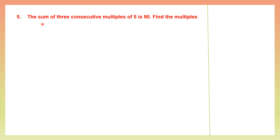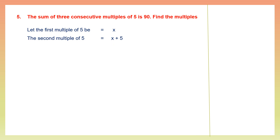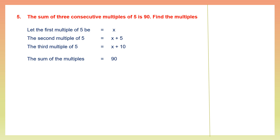Question 5: The sum of three consecutive multiples of 5 is 90. Find the multiples. Let the first multiple of 5 be x. The second multiple of 5 will be x plus 5, and the third multiple of 5 will be x plus 10. The sum of these three multiples is 90, so x plus x plus 5 plus x plus 10 equals 90.